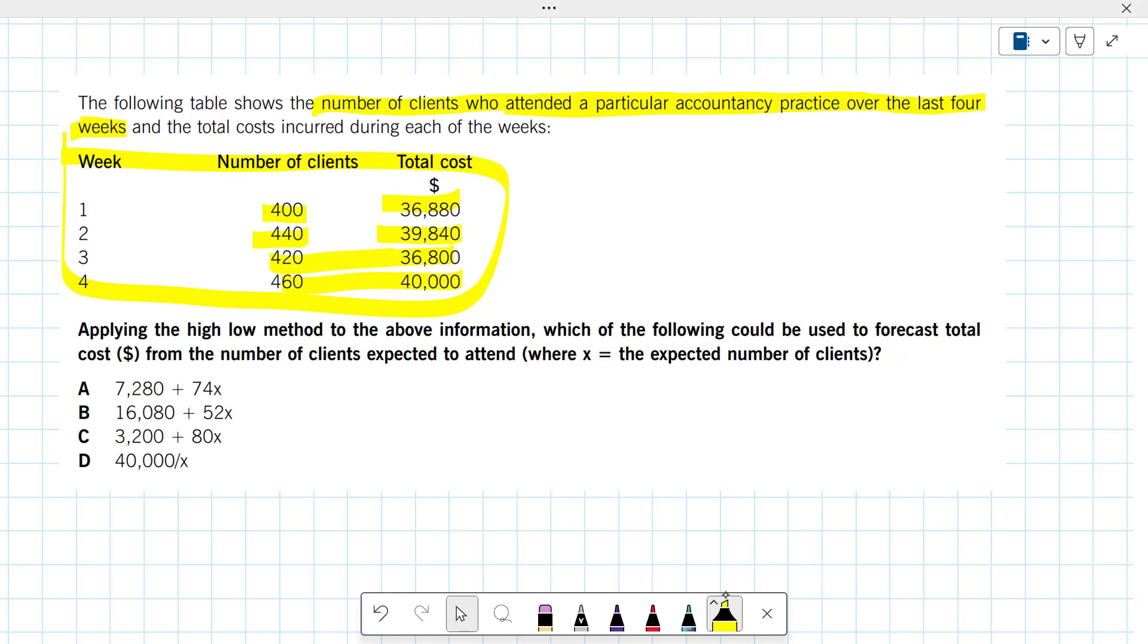Does that look like something we just covered? Well, yes, it does. I've got an independent variable, the number of clients, that's the X, and then I've got a dependent variable, the total cost. That's the Y.